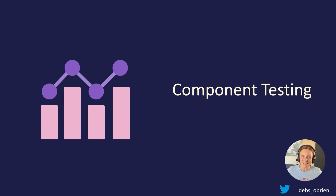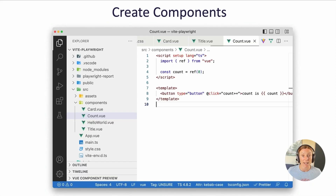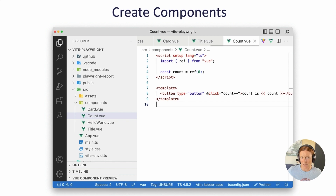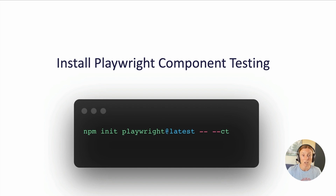Let's talk about component testing. Now that you know how Playwright works — running end-to-end tests — you can also start creating component tests. I've got a Vite application with the hello-world component split into separate components: a card component using slots to contain the count, a count component for incrementing, and a title component. To install Playwright component testing, run: npm init playwright@latest -- --ct, which installs the config file and everything needed.